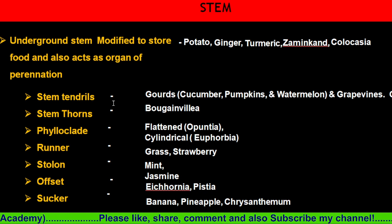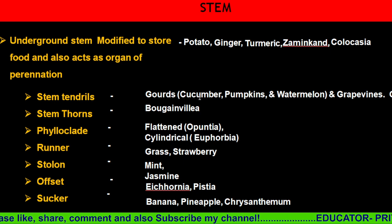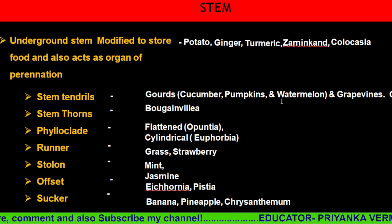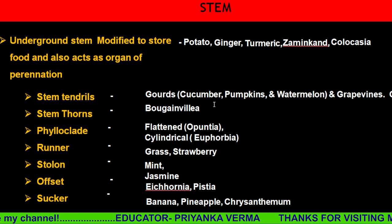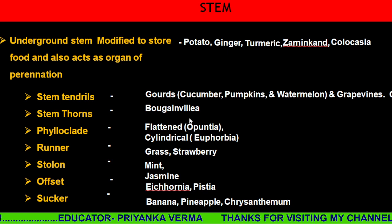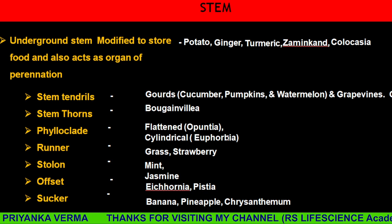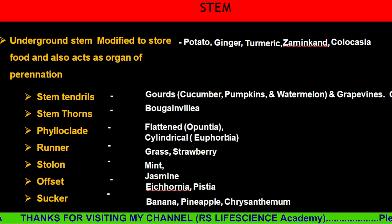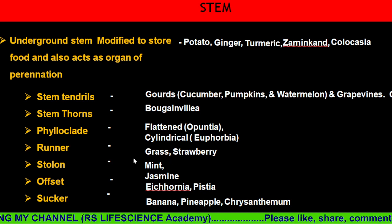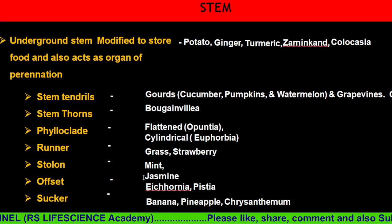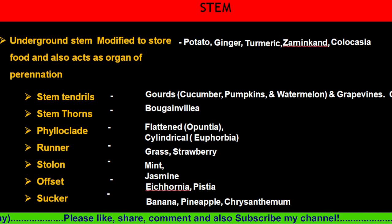For stem modifications: tendrils in cucurbits like cucumber, pumpkin, watermelon, and beans help the plant climb. Stem thorns are found in citrus. Phylloclades are modified stems adapted in dry environments. Runners are found in grass and strawberry; stolons in mint; offsets in jasmine; suckers in banana; and corms in pineapple. These are all examples of stem modifications.